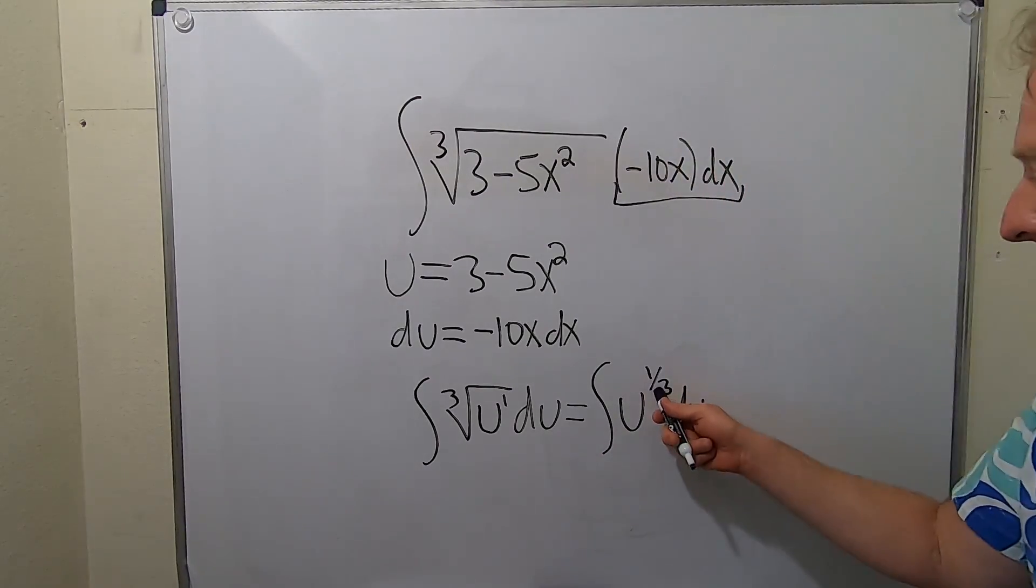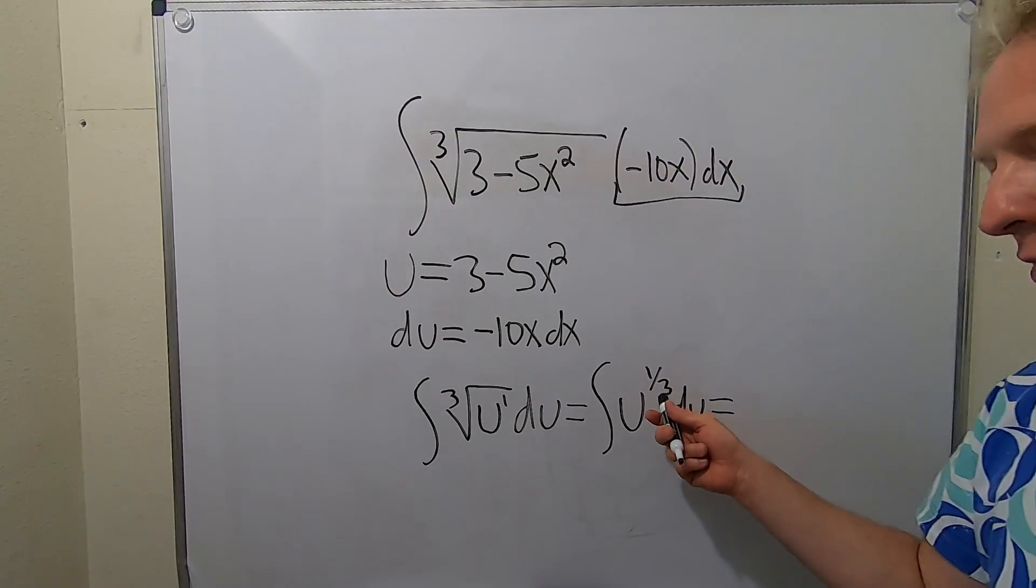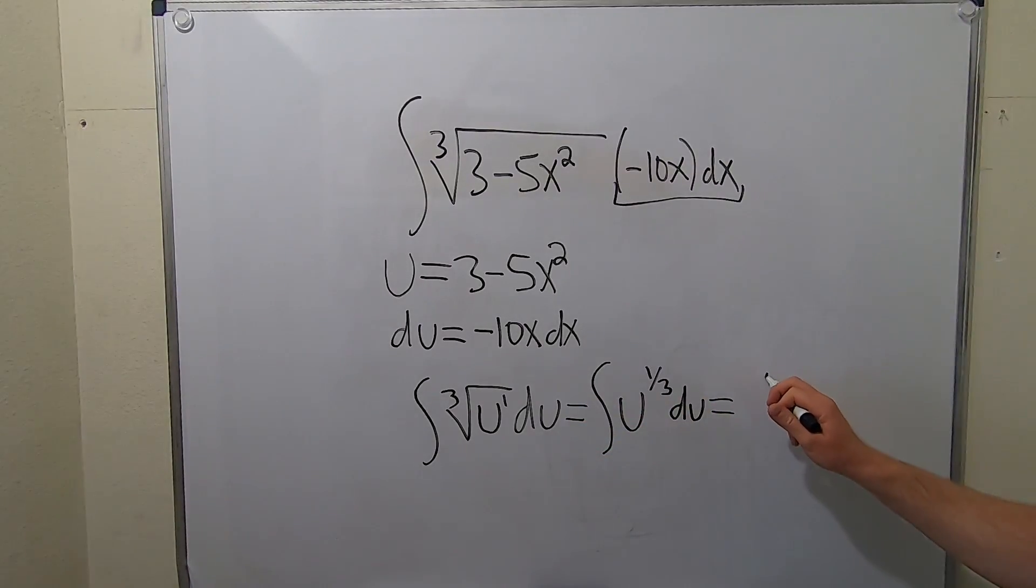Now we can integrate. So you add 1. So when you add 1, you're adding 3 thirds. So 1 third plus 3 thirds is 4 thirds. So we have u to the 4 over 3.